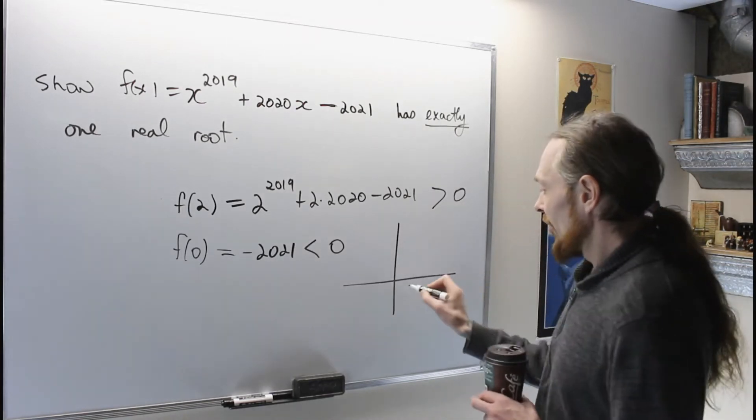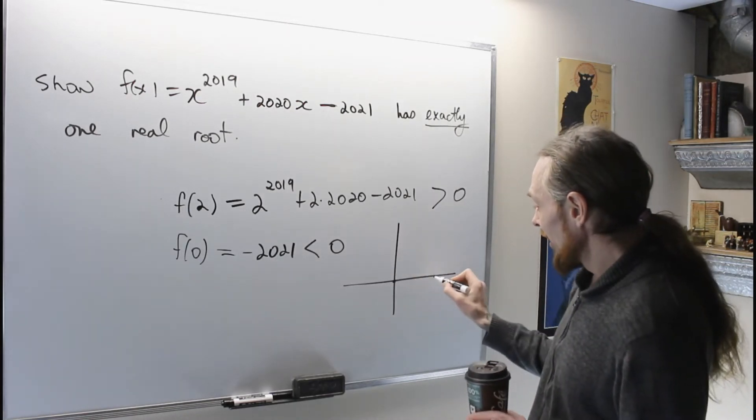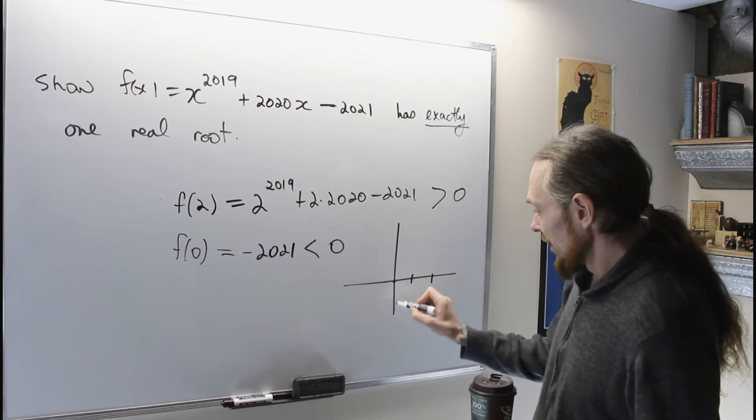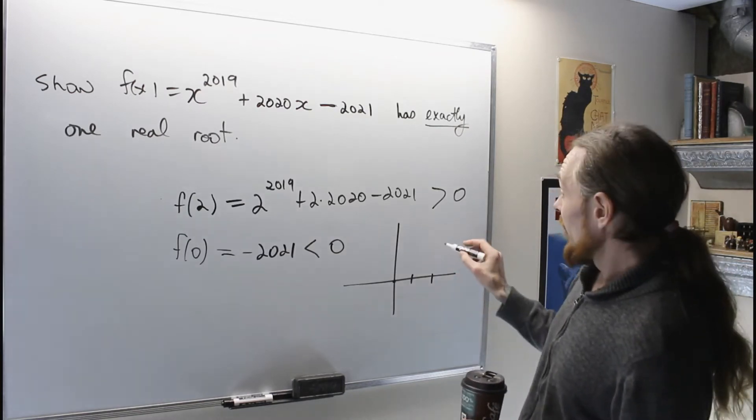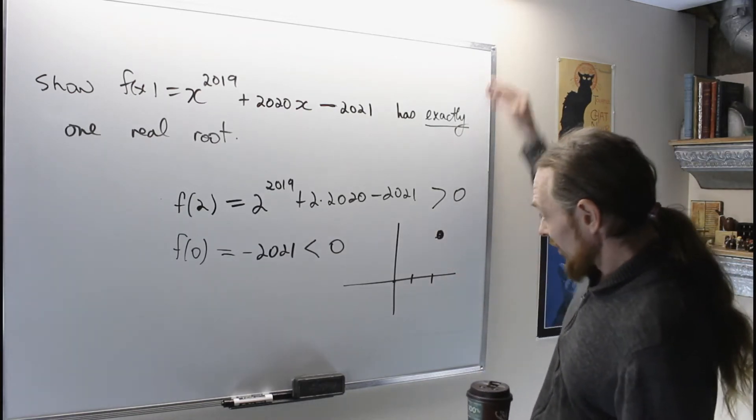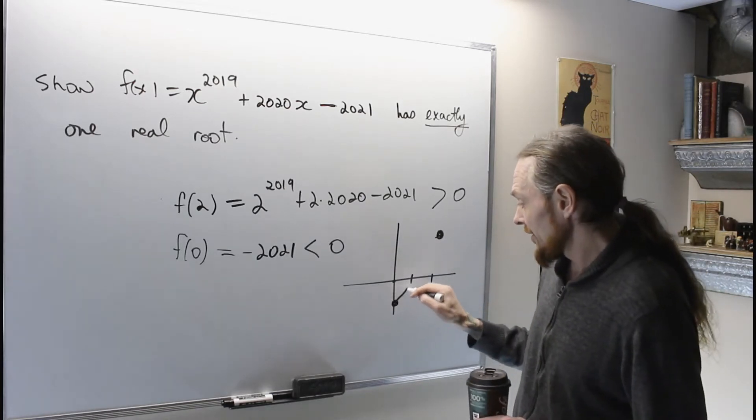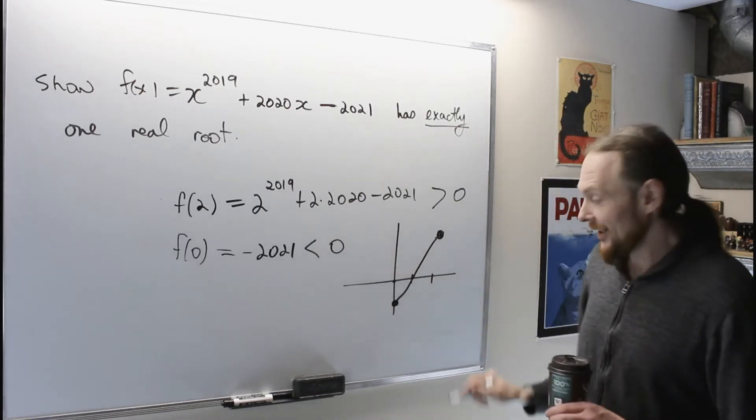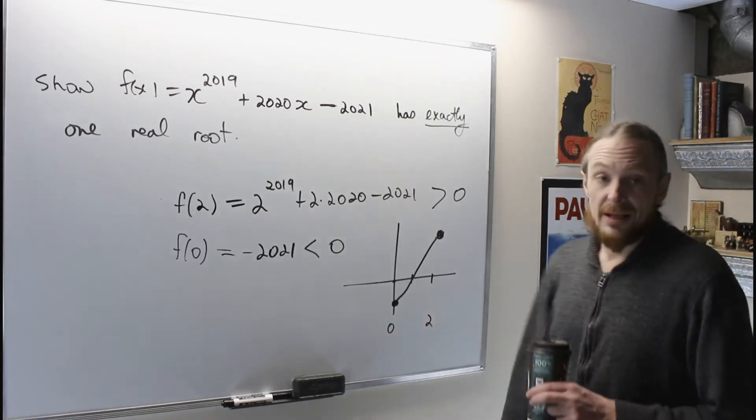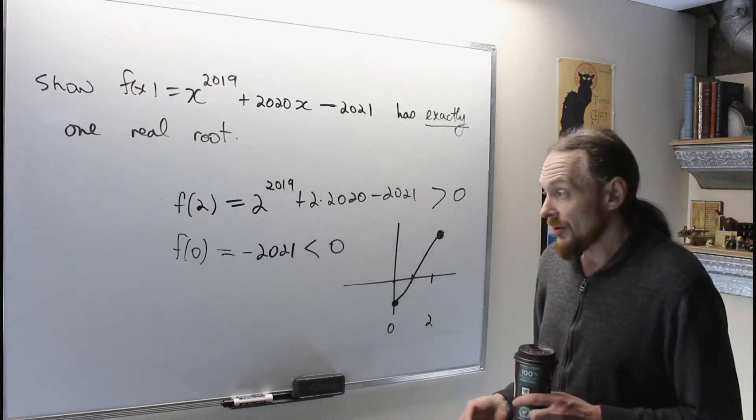or ruined the surprise. What that says is somewhere between 0 and 2, at 2 I was positive, somewhere extremely large, not to scale, and then at 0 I was negative. So that says somewhere in that interval between 0 and 2 there has to be at least one real root.